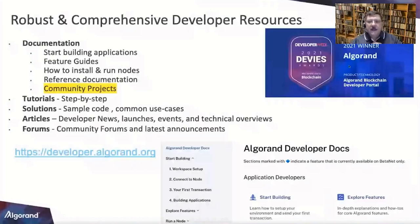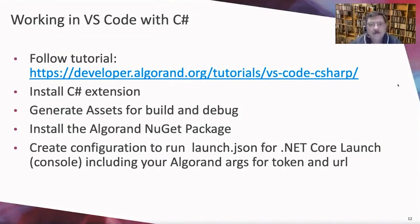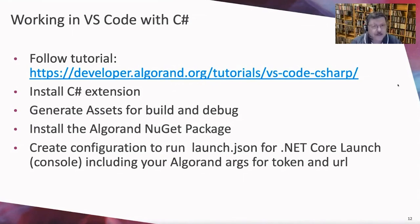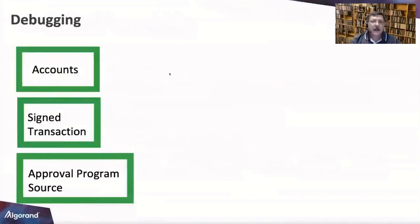Let's talk about using the SDK with VS Code. There is a tutorial on the developer portal for working with C# in VS Code. You install a C# extension, generate assets for build and debug under the view palette, and use the NuGet package manager — search for Algorand to get the SDK. One trick I recently discovered: create a configuration, which generates a launch.json file in the IDE.